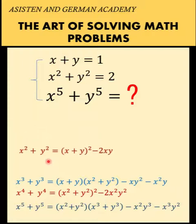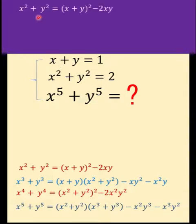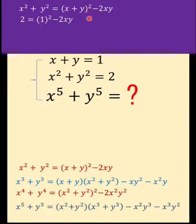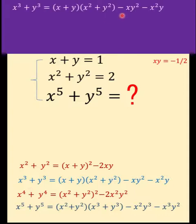We have x squared plus y squared, and we want to find the exact value of x to the fifth plus y to the fifth. Let's begin with what we already know. Using the formula for x squared plus y squared: x squared plus y squared equals 2, x plus y equals 1. Copying the exponent and subtracting 2xy, and solving for xy, we arrive at xy equals negative one half.